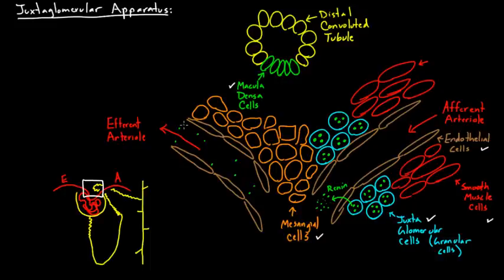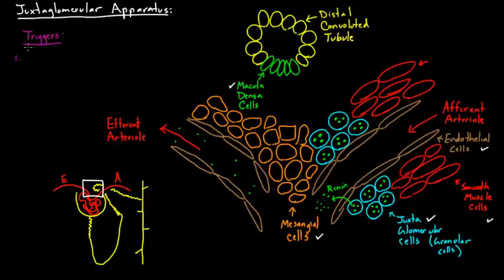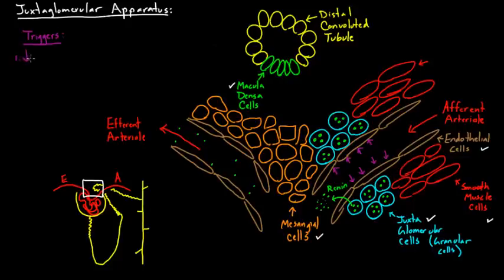What we haven't figured out yet is why or how the juxtaglomerular cells release renin - what is the trigger? There are three common triggers for release of renin. The first is simply low blood pressure. These cells are going to mechanically feel less blood pressure and respond by releasing renin. That's the first trigger, and it's directly sensed by the juxtaglomerular cells themselves.